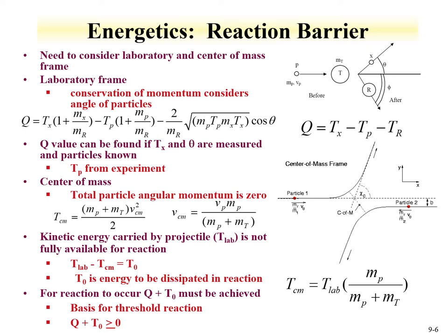We need to consider both laboratory and center-of-mass frames. In the laboratory frame, conservation of momentum must be accounted for: a projectile hits a stationary target, producing two moving products at certain energies and angles from the initial trajectory of the projectile.